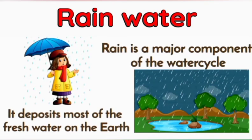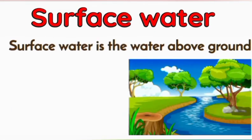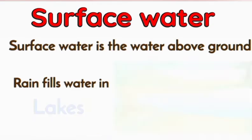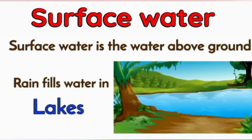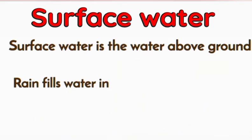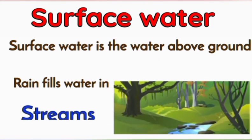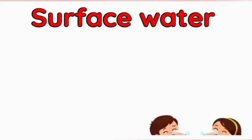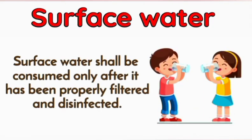Rain is a major component of the water cycle and deposits most of the fresh water on the earth. Surface water is the water that we see above the ground. Rain fills water in rivers, lakes, ponds, streams, and seas and oceans. Surface water shall be consumed only after it has been properly filtered and disinfected.